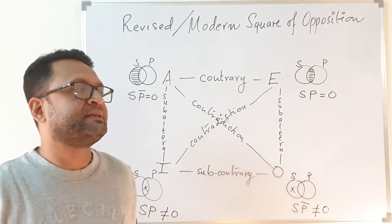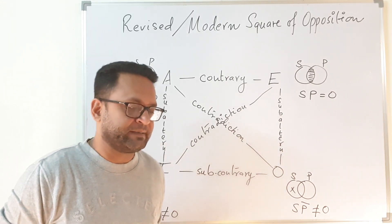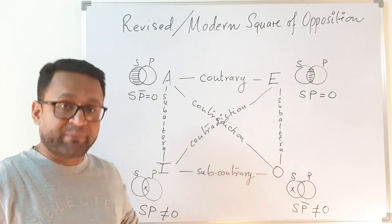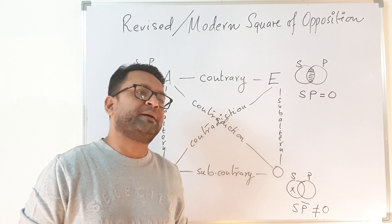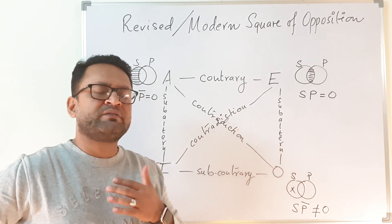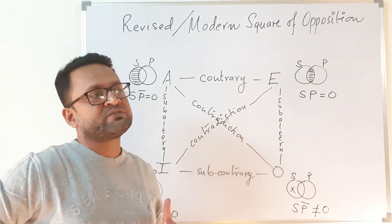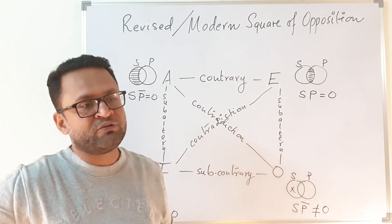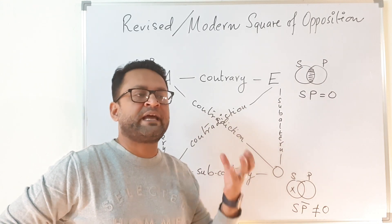Later on, by the mid of the 19th century and the beginning of the 20th century, there were a lot of changes in logic, especially with Boole's contribution and Frege's logic. Mathematical logic and symbolic logic came to the fore, and many of the findings of Aristotle's logic were questioned and supplanted by the new understanding. This especially concerned the understanding of empty terms — we know about empty sets from set theory: every empty set is a subset of every set, and sets can be empty.